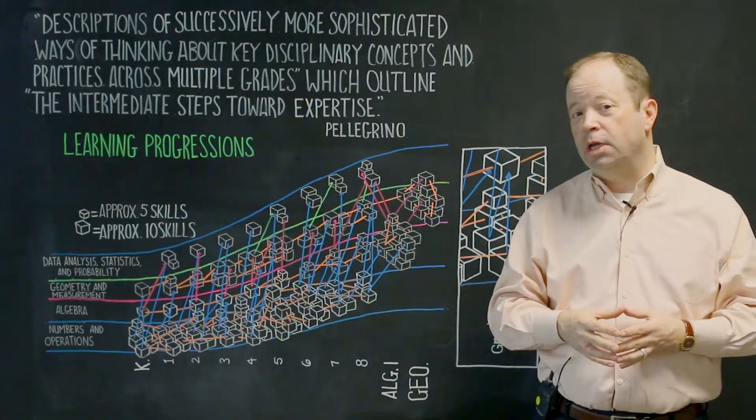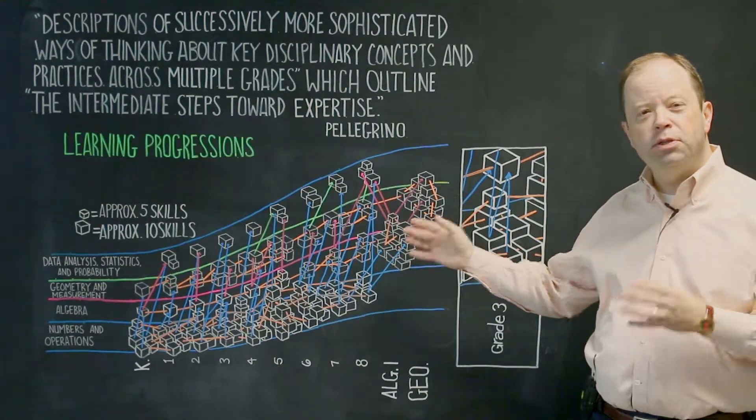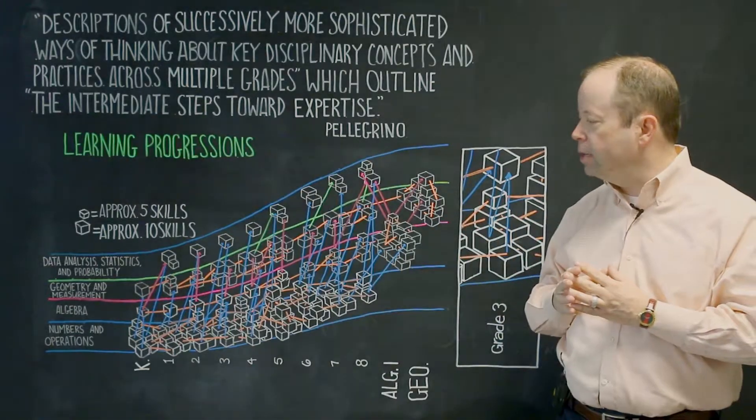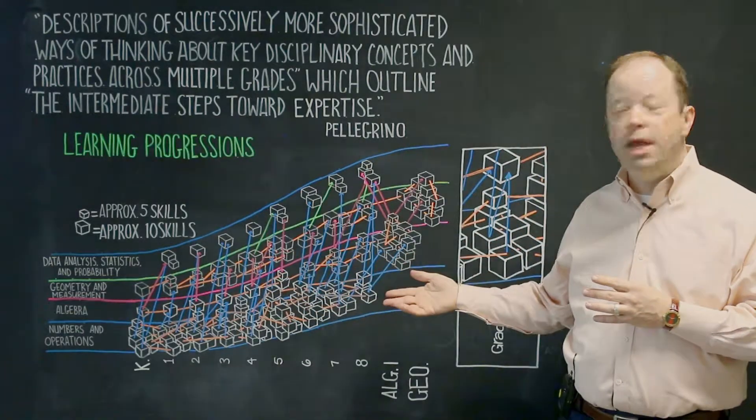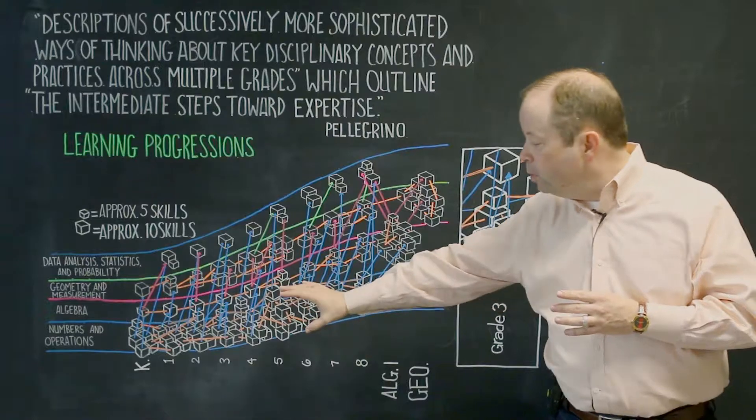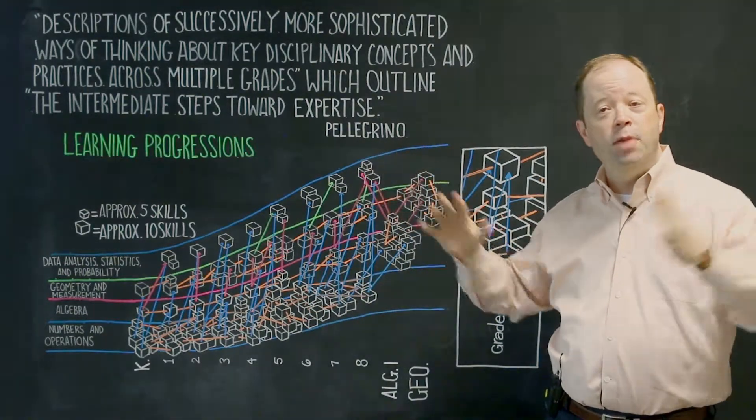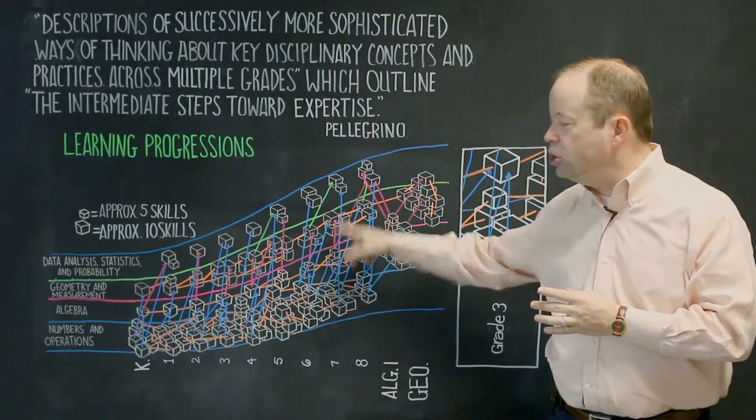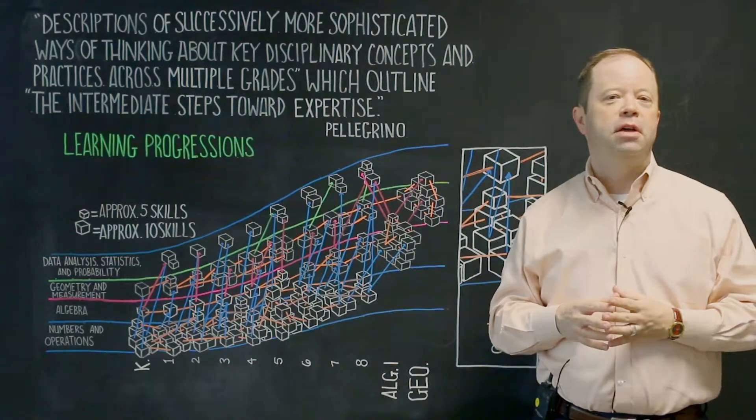Now, learning progressions can be rather large and rather complex, but the image that you see here does a really good job at capturing the overall concept. We see an example here from mathematics with the different domains throughout each grade. We see how the domains build, in some cases are larger in one domain, smaller in another, and the connections in between them. And these connections are very interesting and very informative.